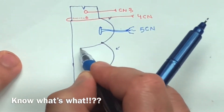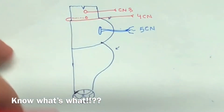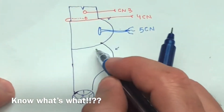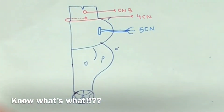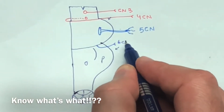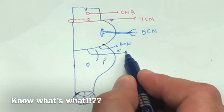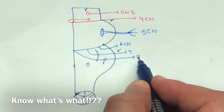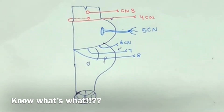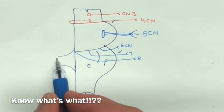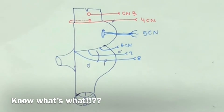Drawing the inferior pontine sulcus and dividing the medulla into the pyramids and olive: the sixth cranial nerve emerges here, the seventh cranial nerve here, and the eighth cranial nerve here. They come in order — five, six, seven, eight. The inferior peduncle connects the medulla to the cerebellum.